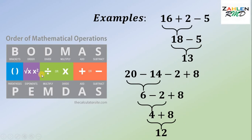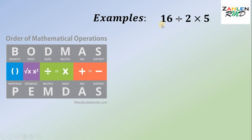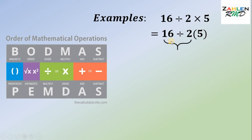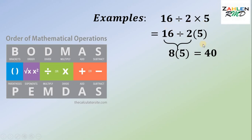Now let's do some examples involving division and multiplication. We have 16 divided by 2 times 5. Note that parentheses also represent multiplication, so it equals 16 divided by 2 multiplied by 5. Division comes first, so 16 divided by 2 gives us 8, then 8 multiplied by 5 gives us 40. The value of 16 divided by 2 times 5 is 40.